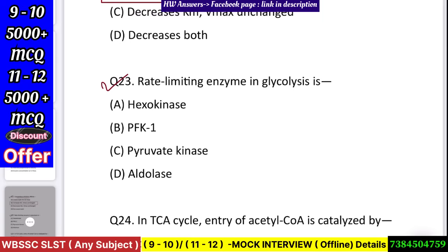Question number 24: Rate limiting enzyme in glycolysis is — hexokinase, PFK, phosphofructokinase-1, or pyruvate kinase/aldolase? Answer: phosphofructokinase-1.